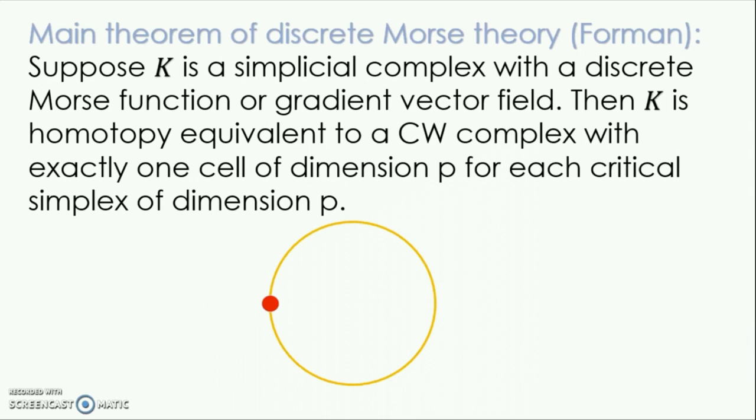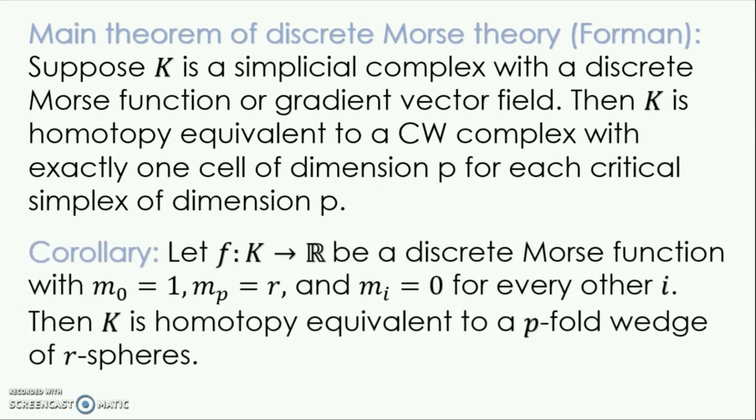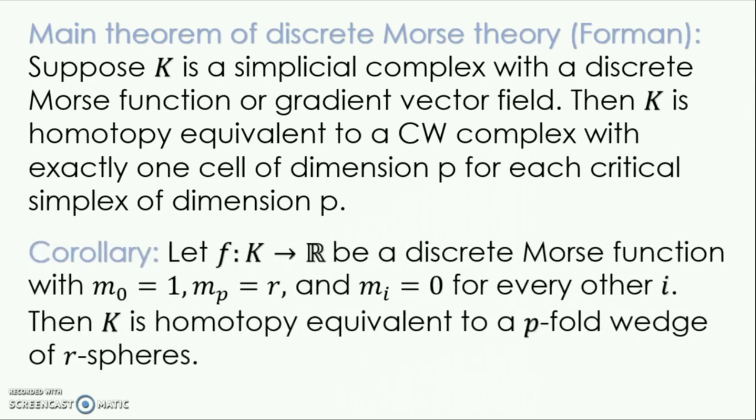Now, this does not always determine the homotopy type explicitly, but there are special cases in which we can determine the homotopy type explicitly. If we have a discrete Morse function with one critical vertex and R critical p simplices and no other critical simplices, then K is homotopy equivalent to a p fold wedge of R spheres.